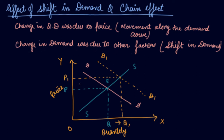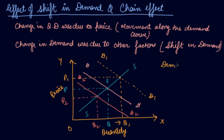Now if your income reduces, you will demand less, so the demand curve shifts leftward to D2. This gives us a new lower quantity Q2 and a new lower price P2.